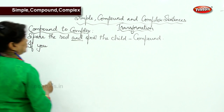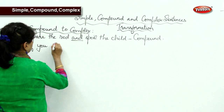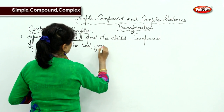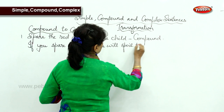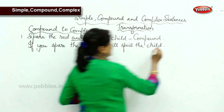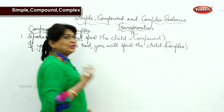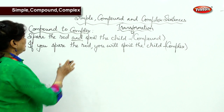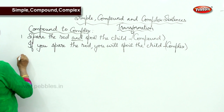How are we going to change 'Spare the rod and spoil the child' into a complex sentence? 'If you spare the rod, you will spoil the child' — this is complex. And how will you change this into simple? You will make 'spare the rod' into a gerund: 'Sparing the rod, you will spoil the child' — that is the simple sentence.